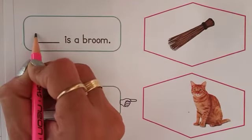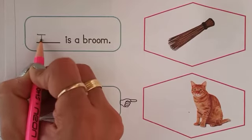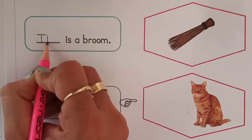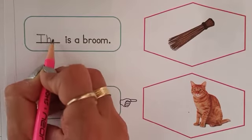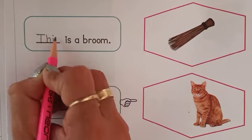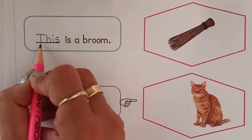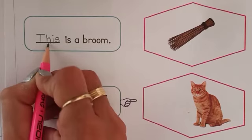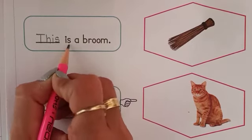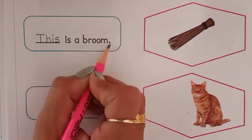First we will write capital T: sleeping line and standing line. For H: standing line, go up, make a curve. For I: standing line and a dot. For S: C curve and reverse C curve. T-H-I-S, this. This is a BROOM. Full stop.